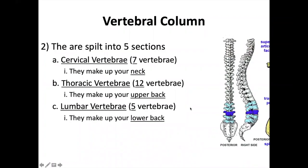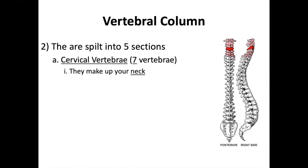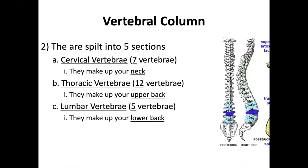So remember those numbers: seven, twelve, and five. There is an easy way to remember this: seven, twelve, and five is when the typical American family eats their meals. The stereotypical American family eats breakfast at seven in the morning, eats lunch at twelve, and eats dinner at five. Cervical: seven. Thoracic: twelve. Lumbar: five.